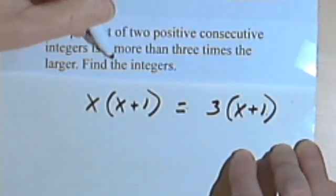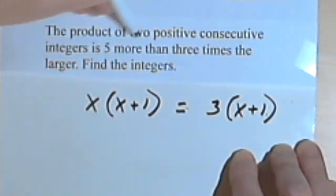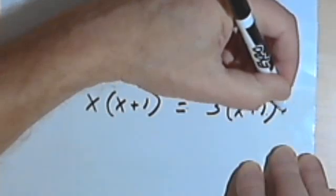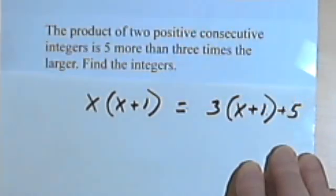The product is 5 more than this, than 3 times the larger. So we'd have to add 5 to this to make them equal.